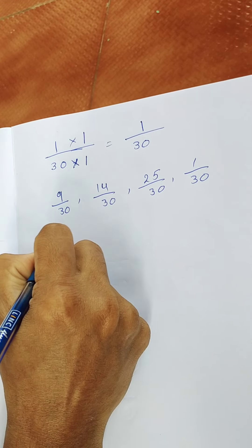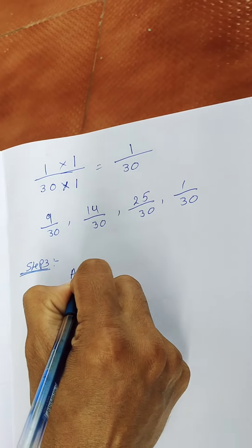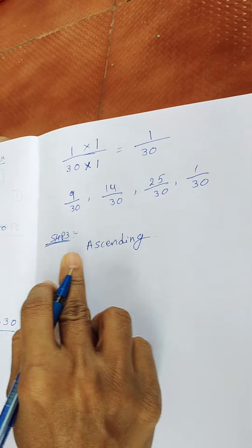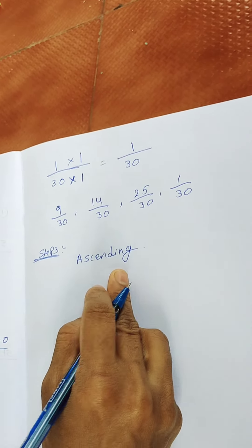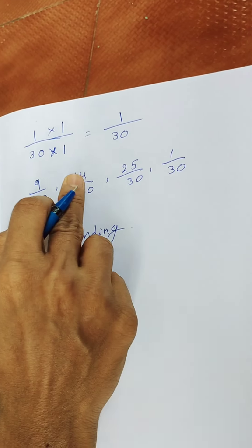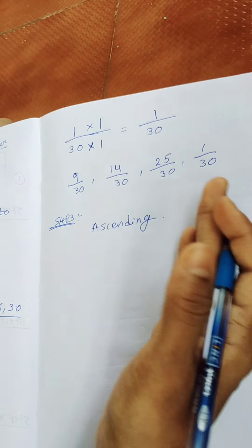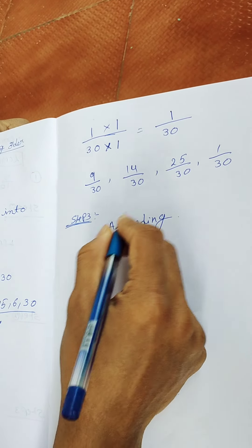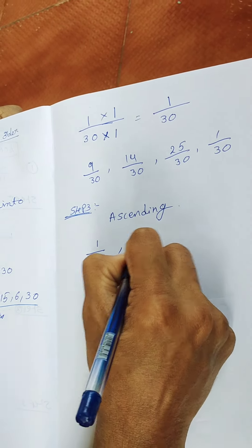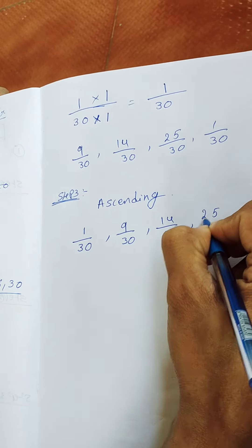In step 3 we compare all the fractions and write ascending order. Ascending order means small number to big number. Since all are like fractions, we look at the numerators and write from small to big: 1 by 30, then 9 by 30, then 14 by 30, then 25 by 30.